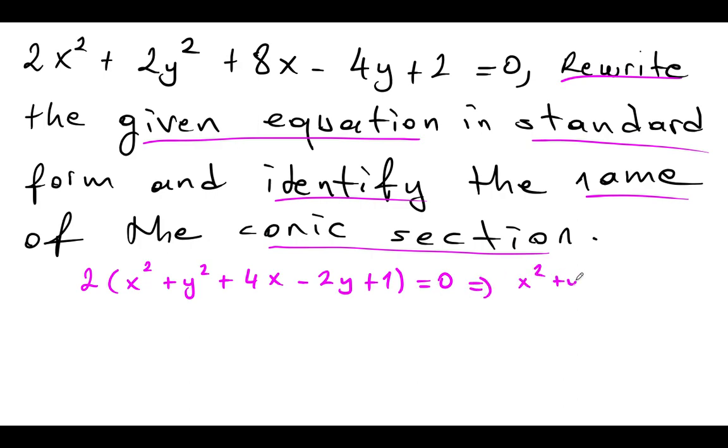So x squared plus y squared plus 4x minus 2y plus 1 equals 0. And then if I combine the similar terms together, x squared plus 4x plus y squared minus 2y plus 1 equals 0.